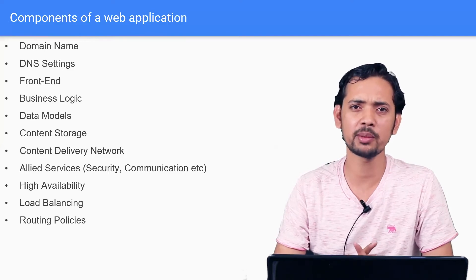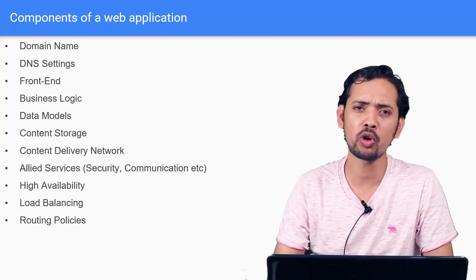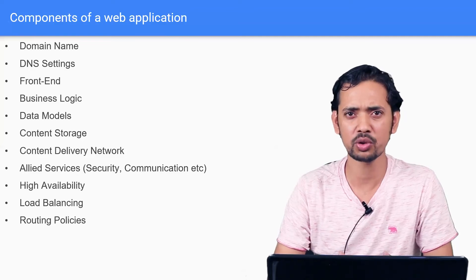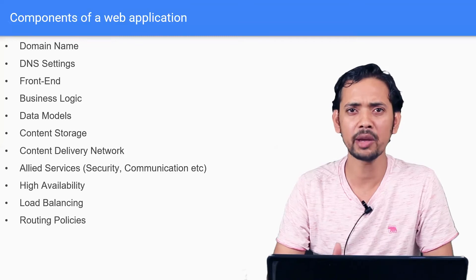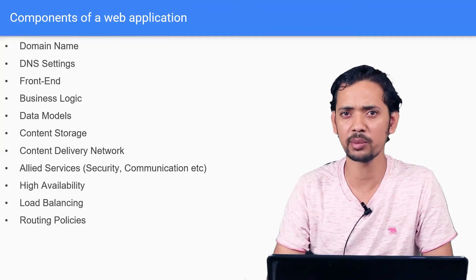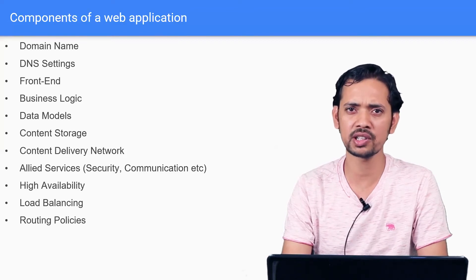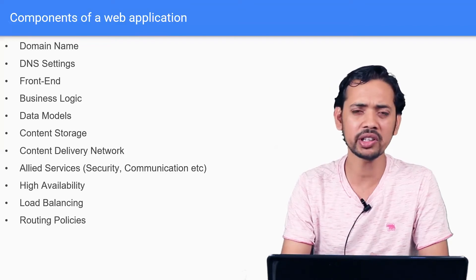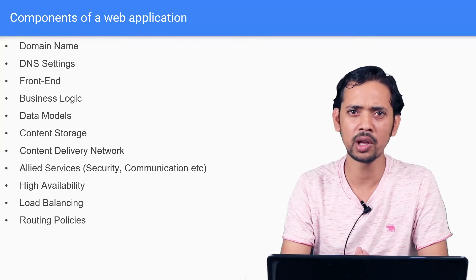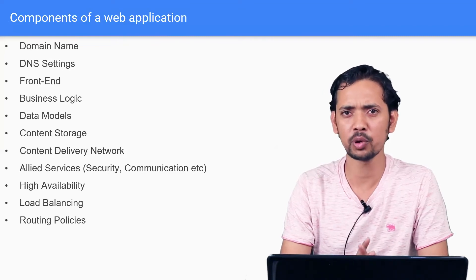While creating the application, you might need allied services for user authorization, security, and communication purposes. You also want your website to be highly available — meaning even if your web servers or application servers go down, it should not affect your end client and there should be no downtime. When working with a large client base, you might be hosting the same application across multiple servers, and you will need some component to distribute the traffic across those multiple servers. That is where load balancing comes in.